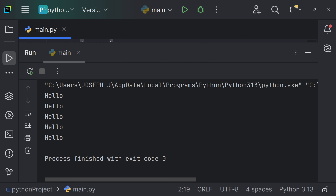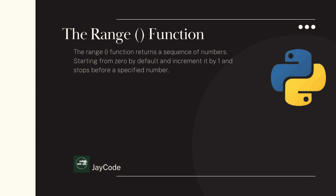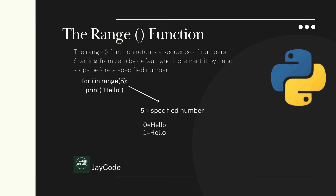We're getting 'hello' printed five times. The range() function returns a sequence of numbers starting from zero by default, increments by one, and stops before the specified number. For this code, five is the specified number, so it goes from zero to four — that's why 'hello' is printed five times.